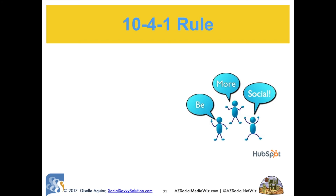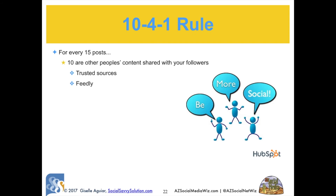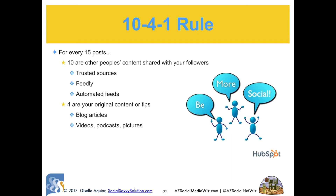This is the 10-4-1 rule. For every 15 posts on any given network: 10 are other people's content shared with your followers — from trusted sources, stories you've curated on Feedly or any automated feeds you've set up. Four are your original content or tips — blog articles, videos, podcasts, pictures, tweets, and posts. And one is a direct sales post, which are calls to action or promotions. The idea is not to just post your promotional content. Remember: you can automate a lot of the media, but you still have to be social — you are sharing and serving, not selling.